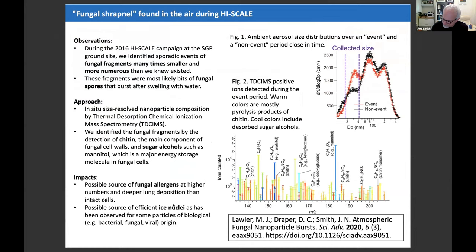Lawler, with Lewis on deck. These are unexpected observations from the 2016 HISCALE campaign at the SGP ground site. We identified events of fungal fragments smaller and more numerous than previously known — probably bits of fungal spores that burst in the atmosphere. We used size-resolved aerosol measurements from the TD-CIMS, identifying fragments by detection of chitin (a marker of fungal cell walls) and sugar alcohols. During events, there's an enhancement of 20–50 nm particles. The mass spectrum shows sugar alcohols in blue and chitin decomposition products in red. These could be a new source of fungal allergens or ice nuclei.